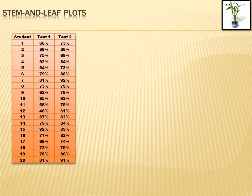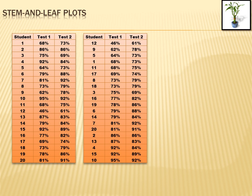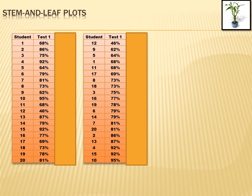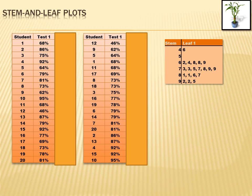The first thing I want to do is put the test scores in order. I've picked test 1 to order them by, from the lowest score up to the highest. The lowest score was 46 and the highest was 95. Now I'm going to organize this data using a stem and leaf plot, starting with test 1. Let's hide test 2 so it doesn't confuse you. A stem and leaf plot is a little bit like a matrix — I create a T shape where the left column is called stem and the right column is called leaf. This one is for test number 1.